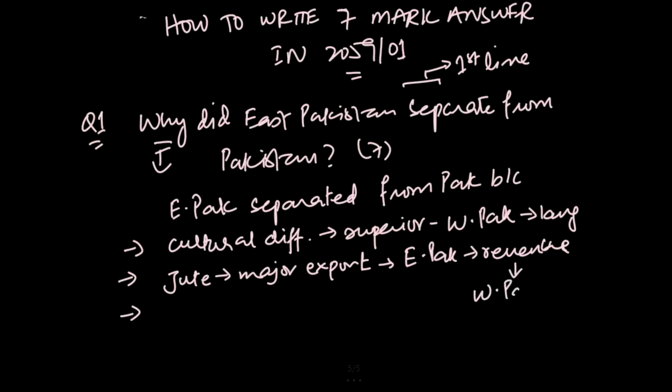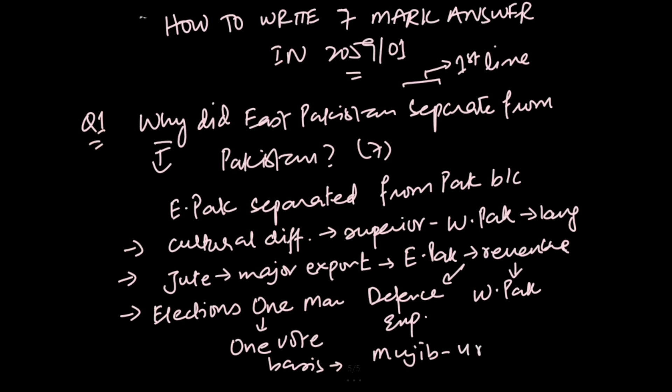And third point is elections. Elections were finally held on a one man, one vote basis. Mujib won, but Bhutto took over and imprisoned him.